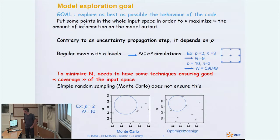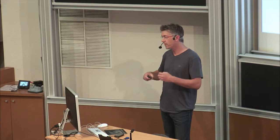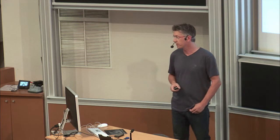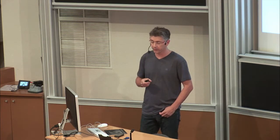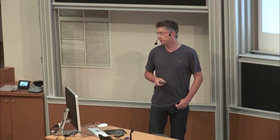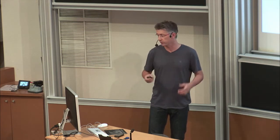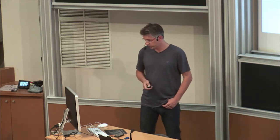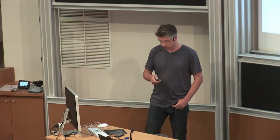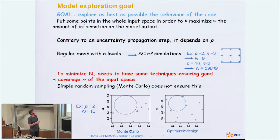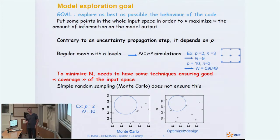To resume this motivation: we want to explore as best as possible the behavior of the code with a limited number of points. I have, for example, 100 points and an input space of 50 dimensions — a very big dimension. The goal is to put some points in the whole input space in order to maximize the amount of information on the model output. This goal strongly depends on the dimension P of the input space.